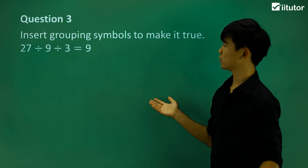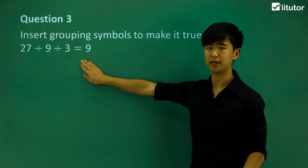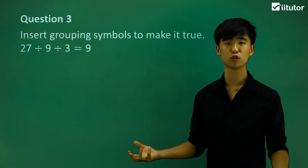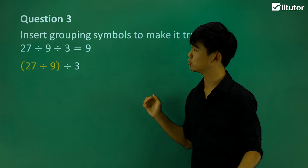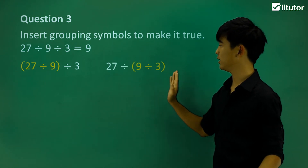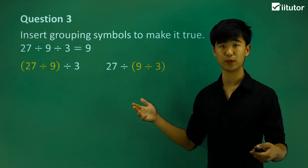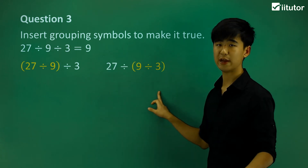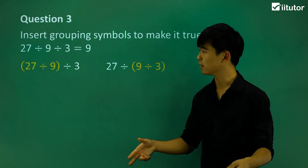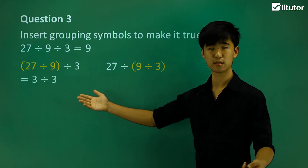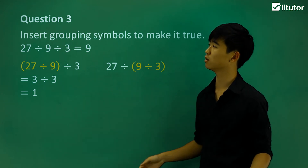Let's move on to question 3 — very similar. Insert grouping symbols to make this equation true, and we have a bunch of division signs. Let's think of the different possibilities: we can put brackets between those two numbers, or between the 9 and the 3. Usually with three terms, those are the two possibilities, outside of putting brackets over everything. Let's calculate — doing what's in our brackets first: 27 divided by 9 is 3, and 3 divided by 3 is 1, which is not equal to 9. So that's the wrong one.